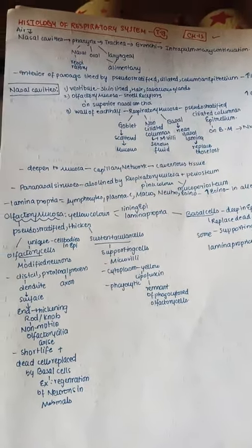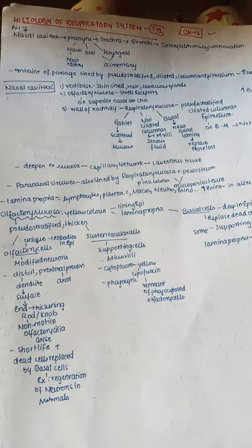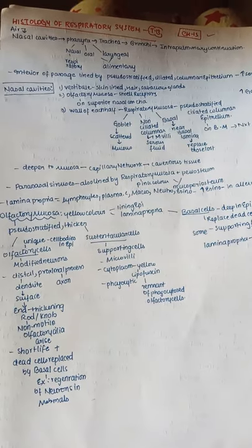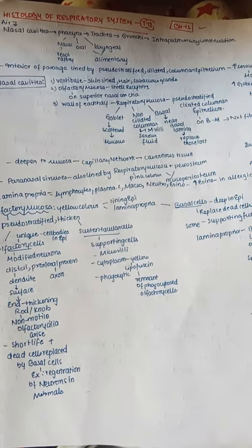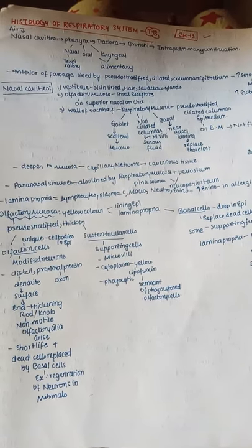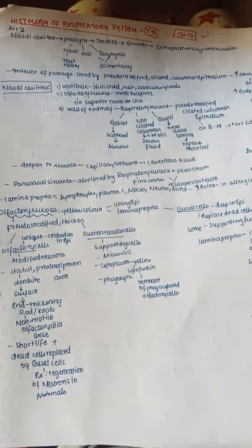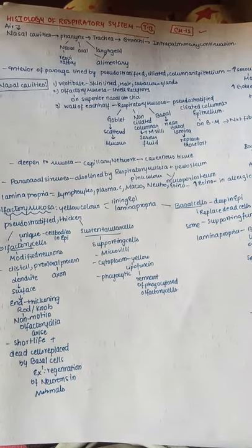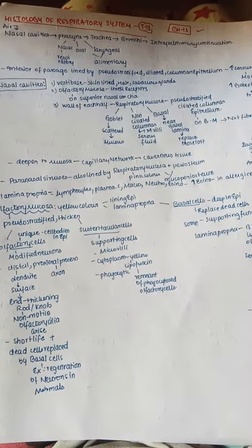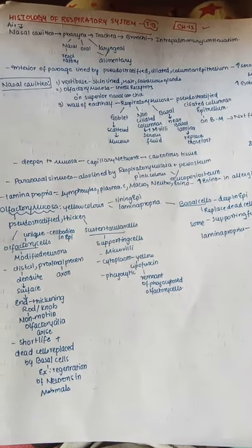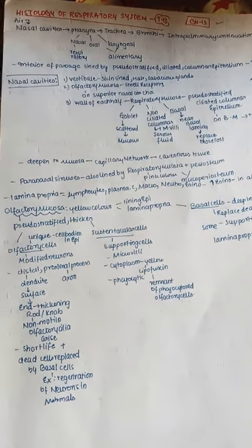The pharynx is divided into the nasal part, which is mainly respiratory in function, the oral part, and the laryngeal part. The laryngeal part and oral part are mainly alimentary in function.